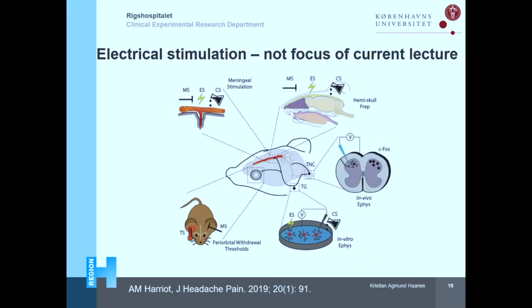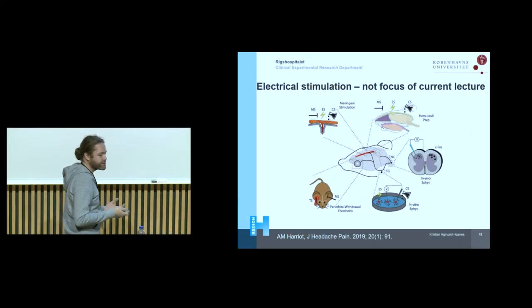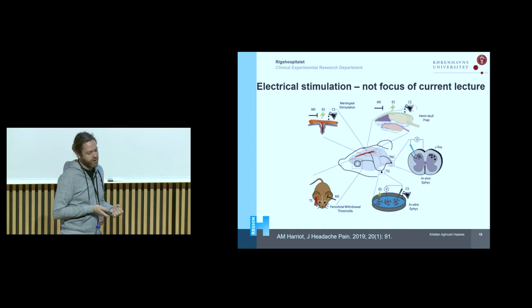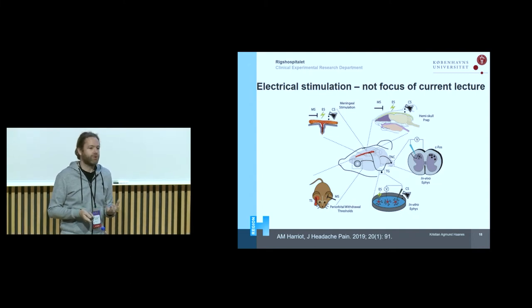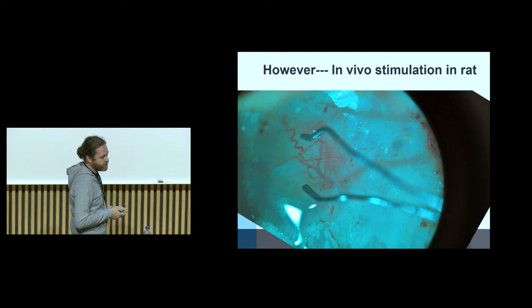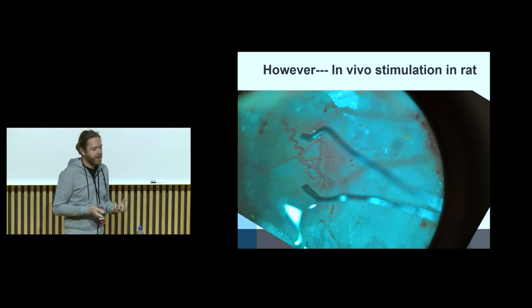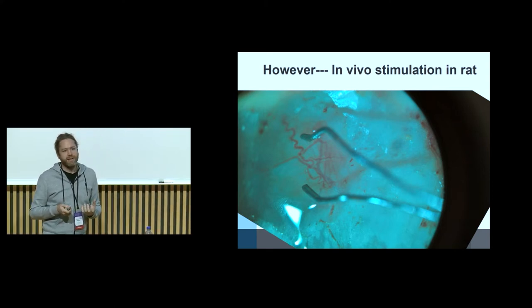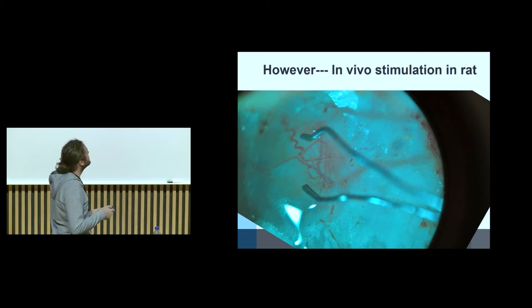Although electrical stimulation is not the primary focus of this lecture, there are several models of electrical stimulation, many of which go into the neurons without a direct link to the vasculature. But some models have a link to the vasculature — particularly when you look at stimulation on the dura. This method is, in my opinion, maybe one of the best models to study many of the mechanisms in migraine, because it involves mechanisms known to be linked to the pathology, but without including the pain component.